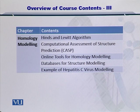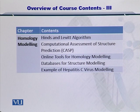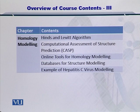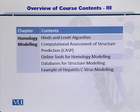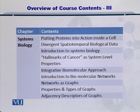The Heinz and Leavitt algorithm will be used, and the Computational Assessment of Structure Prediction, or CASP, will be introduced to evaluate the quality of structure prediction. Online tools for homology modeling will be listed, and the relevant databases will be provided as well. We'll then perform our case study on the Hepatitis C virus NS3 protein and its folding and associated dynamics in the homology modeling chapter.